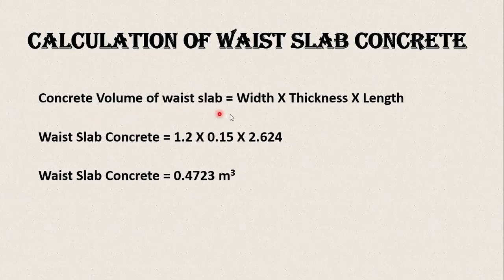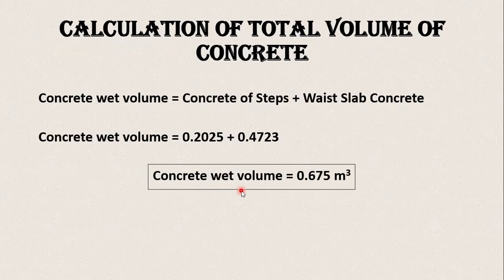After calculating the length, we can now find the concrete volume of the waste slab: width × thickness × waist slab length, which gives 0.472 meter cube. The total volume of concrete is calculated by adding the concrete of the steps plus the waste slab concrete, giving a total wet volume of 0.675 meter cube. For the quantity of cement, sand, and aggregate, you can watch my other video — the link is in the description.